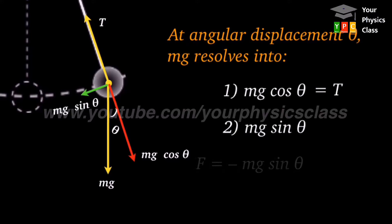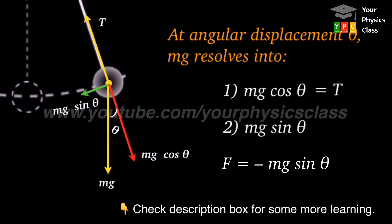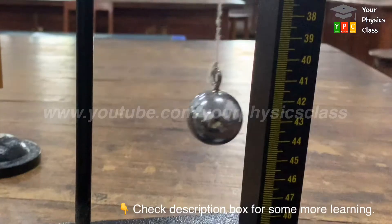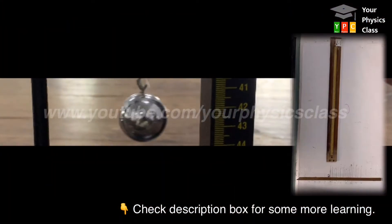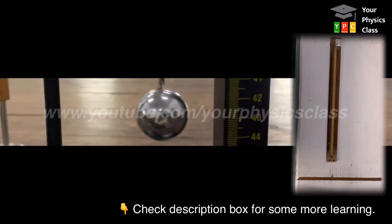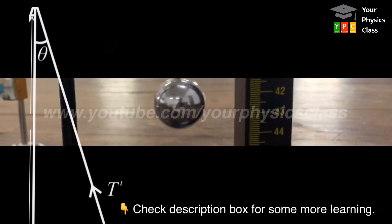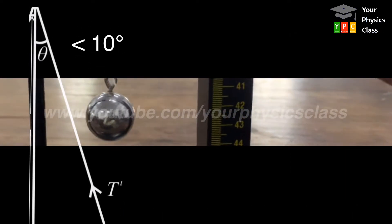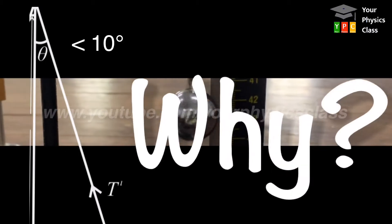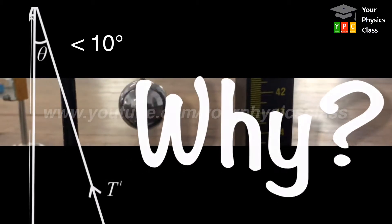Hence, it can be written as F equals minus mg sin theta. By vector conventions, this force is taken negative. For linear SHM, theta must be very small, that is less than 10 degrees. Now the question is why less than 10 degrees. Let me clear it.